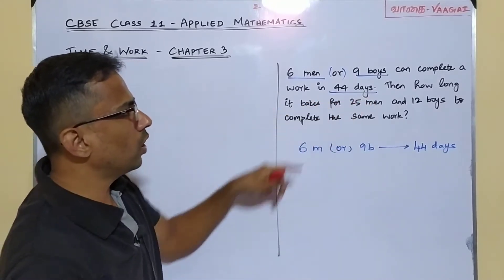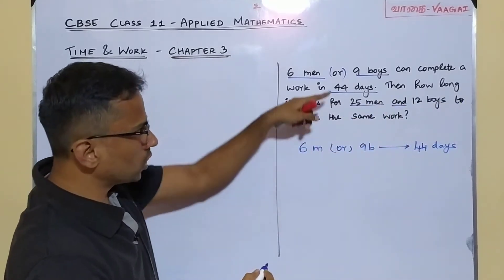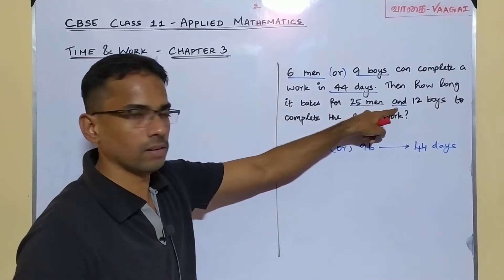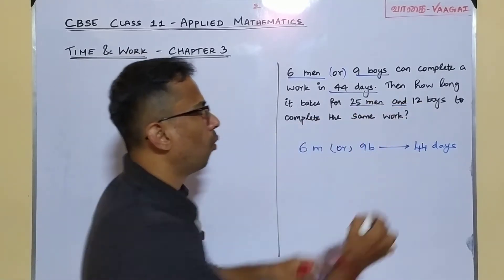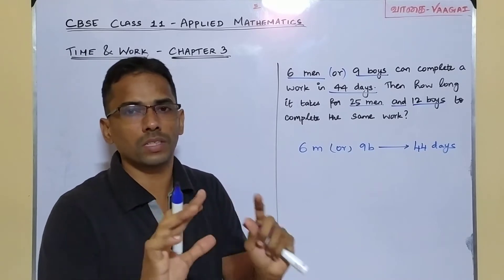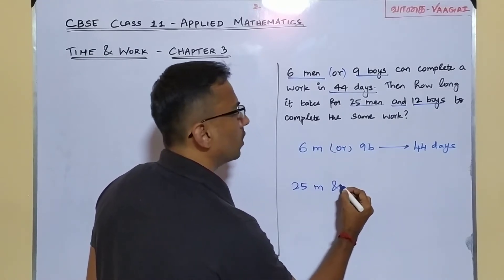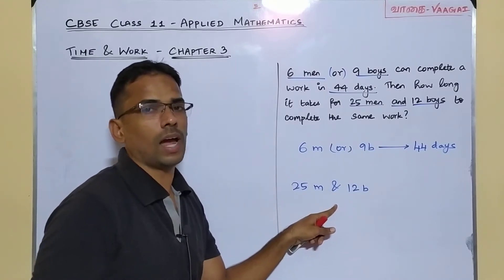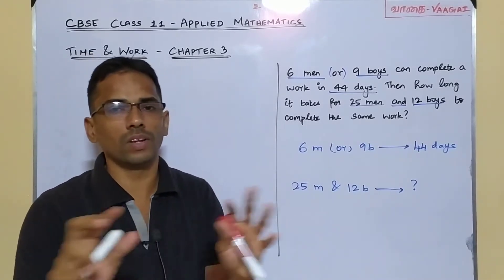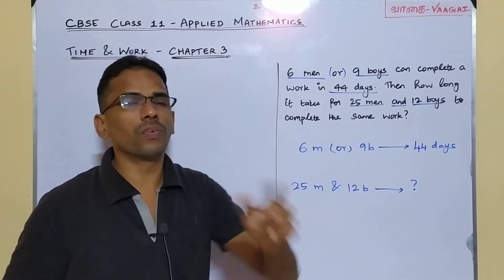Now let's carefully see what is given in the second part: "How long will it take for 25 men and 12 boys?" Here this word 'and' is very, very important. The first part of the question had the word 'or' between the two groups, whereas the second part has the word 'and' — 25 men and 12 boys to complete the same work. Each and every word in this question matters.